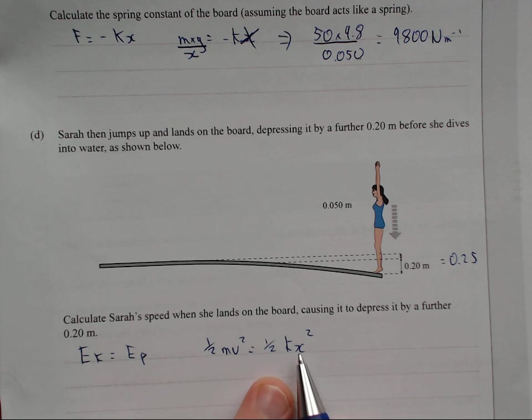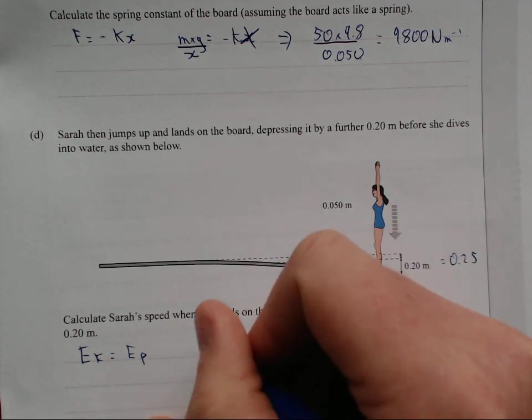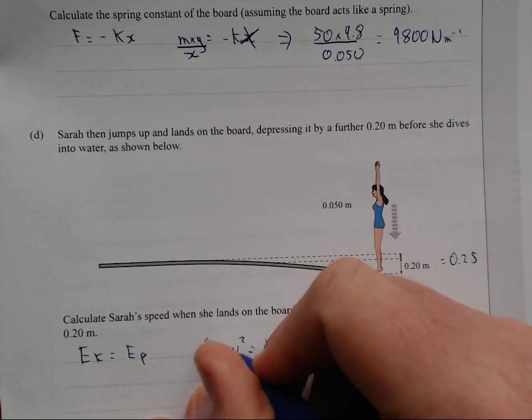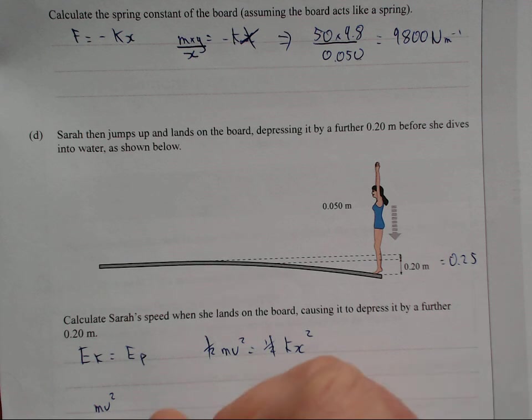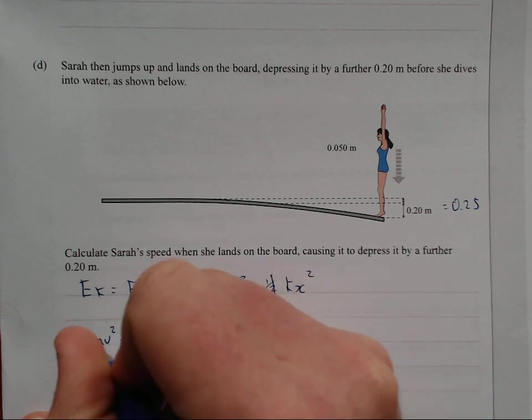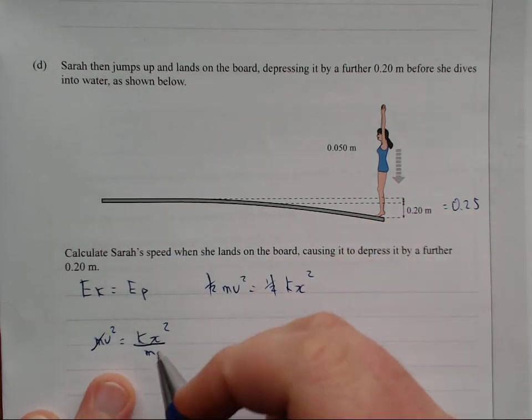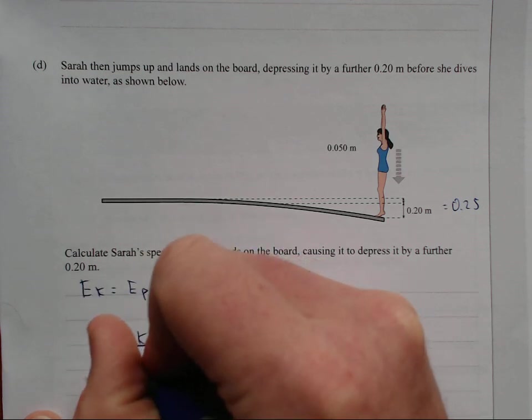Right. So, times both sides by 2. So, I'm going to times both sides by 2, which just cancels this out, cancels that out. So, I get mv squared equals kx squared. I'm trying to find the velocity. So, I'm going to divide both sides by m. So, I'm going to divide this by m. I'm going to cancel that out. And now, I might as well take the square root of both sides. So, I'll cross that out, take the square root of that.